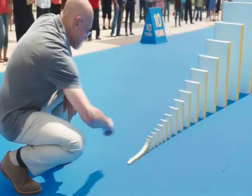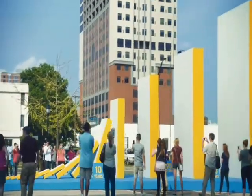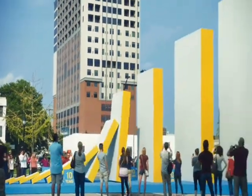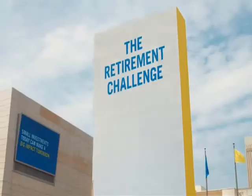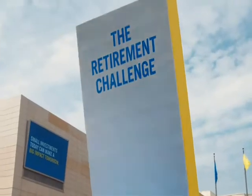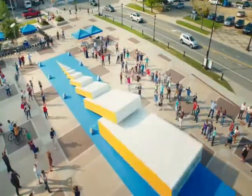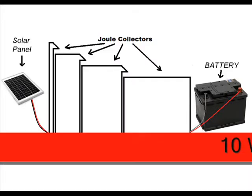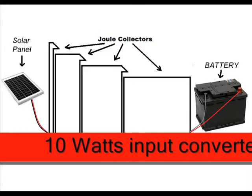This is the actual demonstration of the Domino's experiment, wherein lesser energy steps up to a higher energy by the application of mass and motion to enhance the kinetic energy. The illustrations here show a 10-watt solar panel as the lowest source of energy.